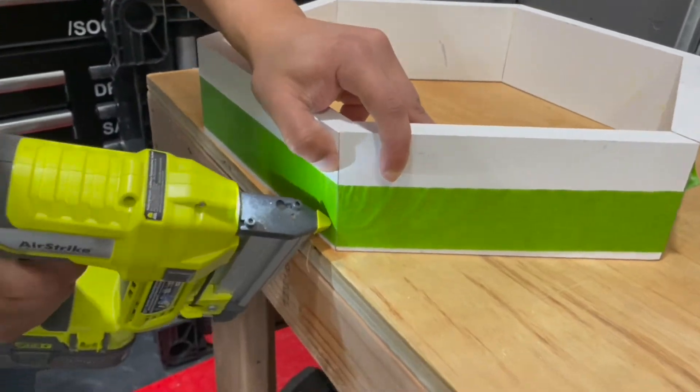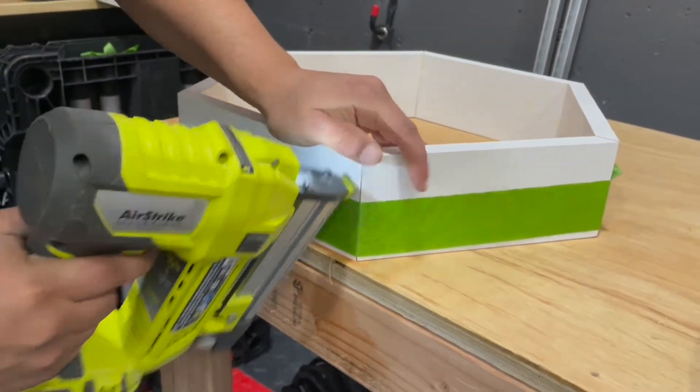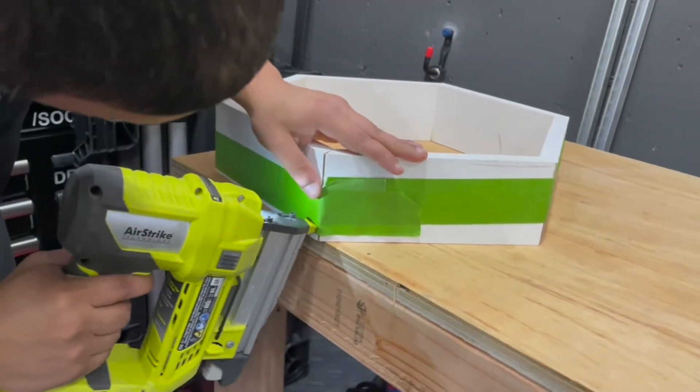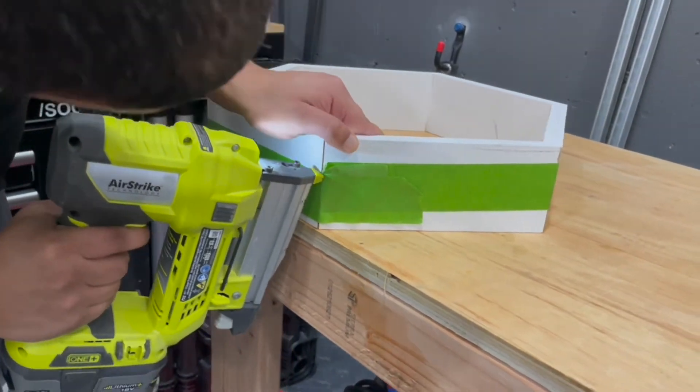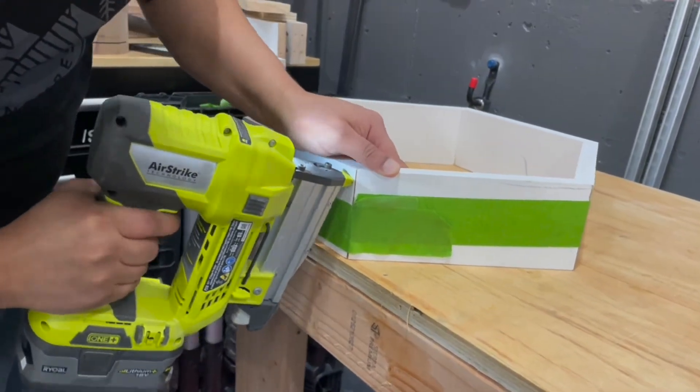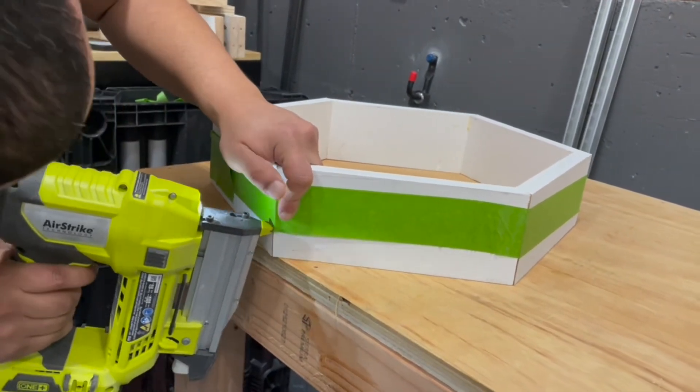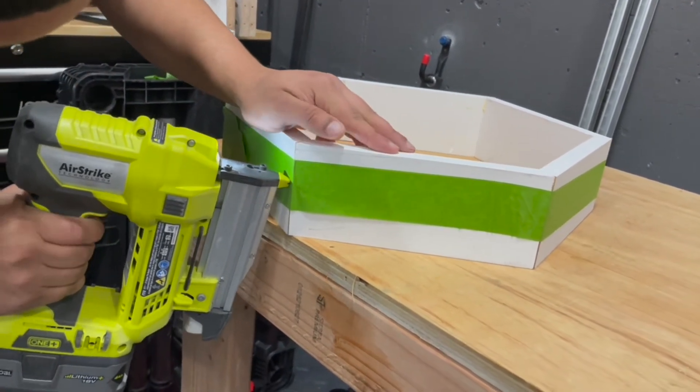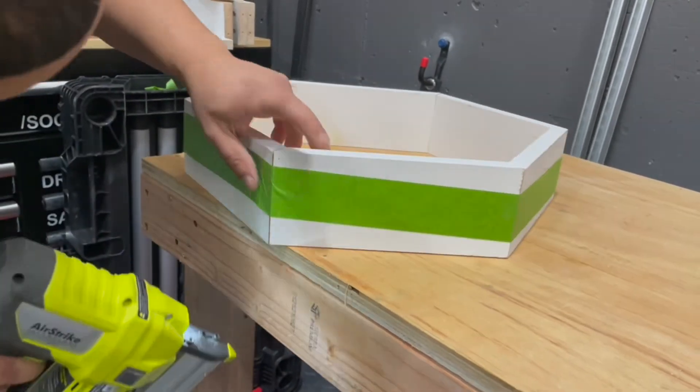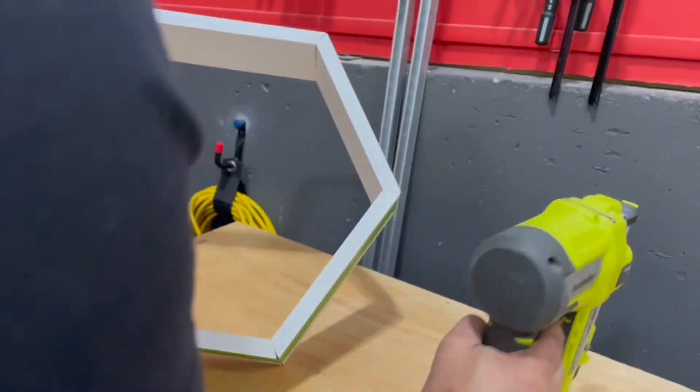And then at the end we just finished it off with some pin nails. You don't need to do this step. I mean we do it just because we want to add support. But you really don't have to since the wood glue would be a strong bond for it to stay together. But yeah this is how you do it. So the next step would be painting.